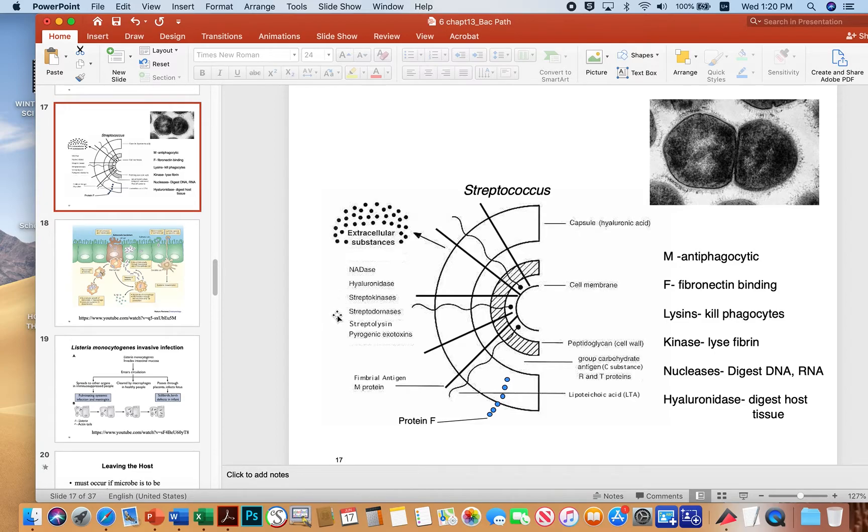They produce these strepto-RNAases, which are nucleases. So these guys here that digest RNA and DNA and streptolycine. Streptolycines are things that outright kill host cells, like phagocytic cells. And they do that for a reason.